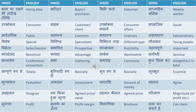Saptahik shramik means weekly worker. Upabhokta means consumer. Grahak means customer or client. You have to understand the small difference between a consumer and a customer or client. Consumer is upabhokta, and grahak is customer or client. Upabhokta maamla means consumer affairs.